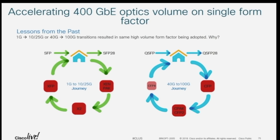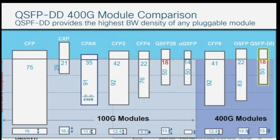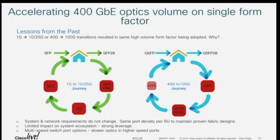If you follow optics modules, there are essentially 1,000 form factors out there. Typically they start big and they go small, and every time we do this transition we have to spend a lot of money building each successive generation. For example, going from 1 gig to 10 gig SFP — we couldn't fit 10 gig in the same form factor right away, so we build something bigger, then we get smaller and smaller, and finally we get back to the same form factor.